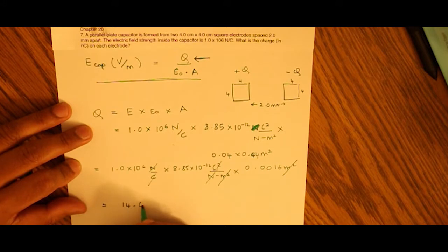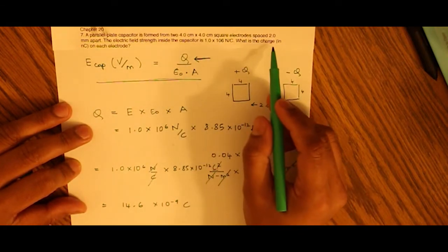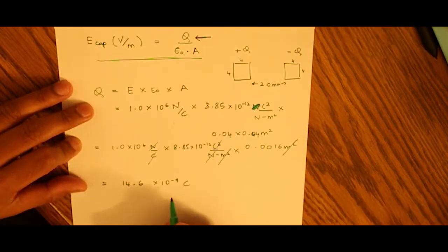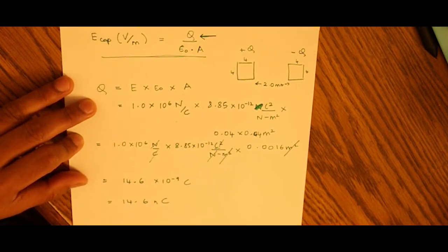We wanted our answer in nanocoulombs, so 10^-9 is a nanocoulomb. We can rewrite this as 14.6 nanocoulombs.